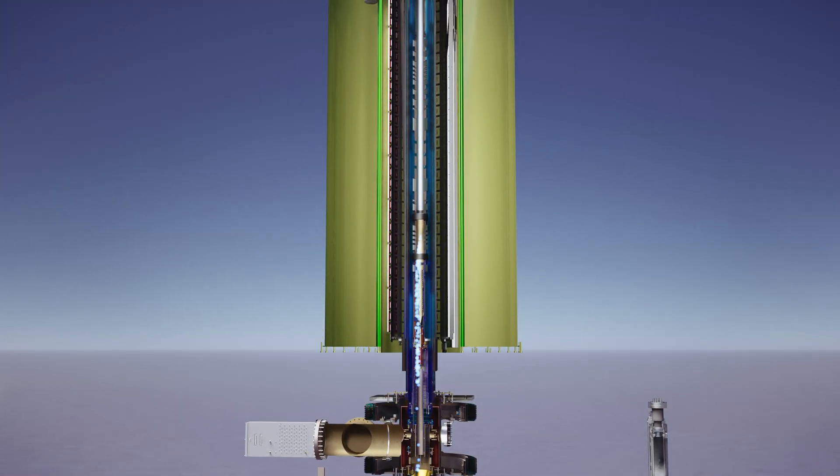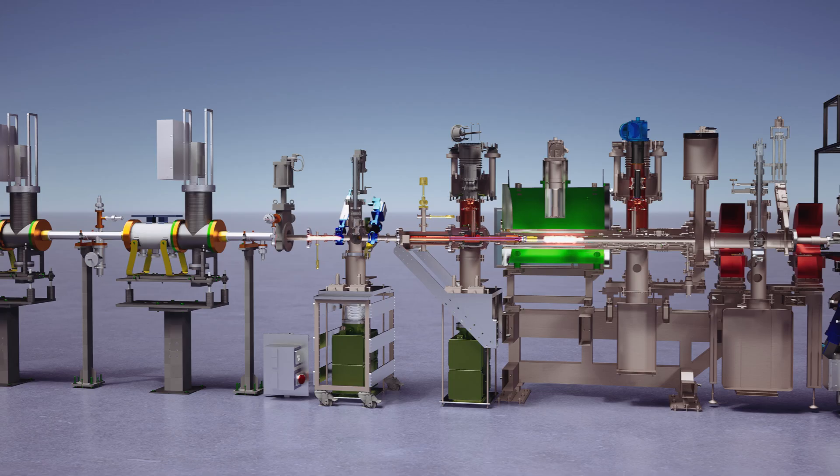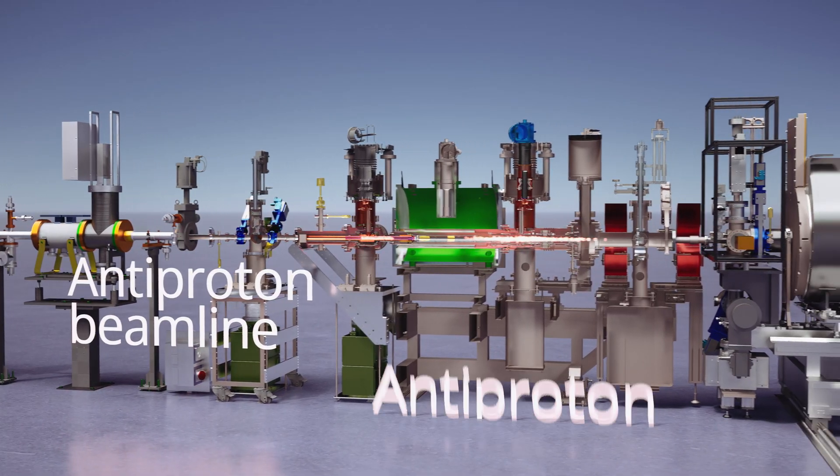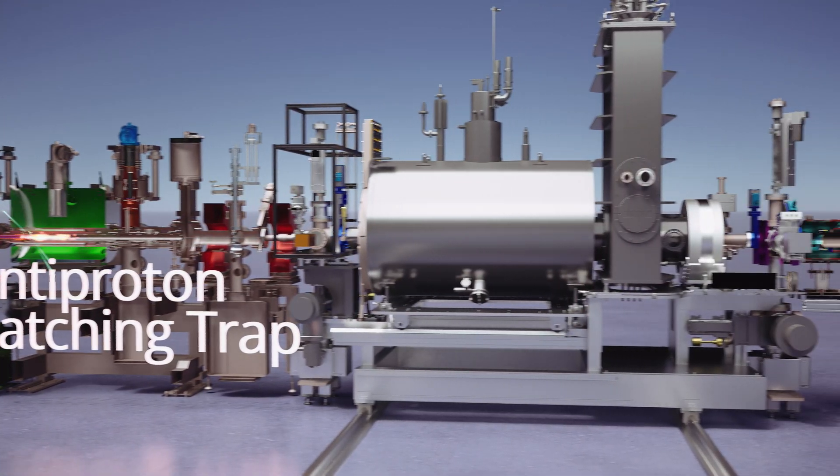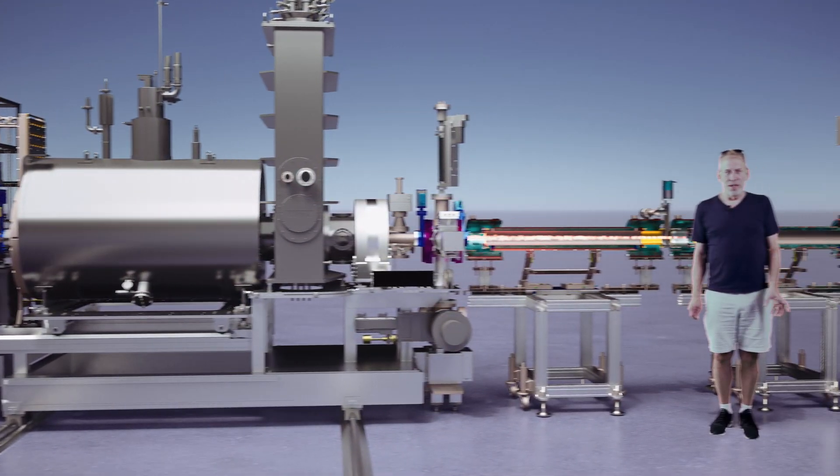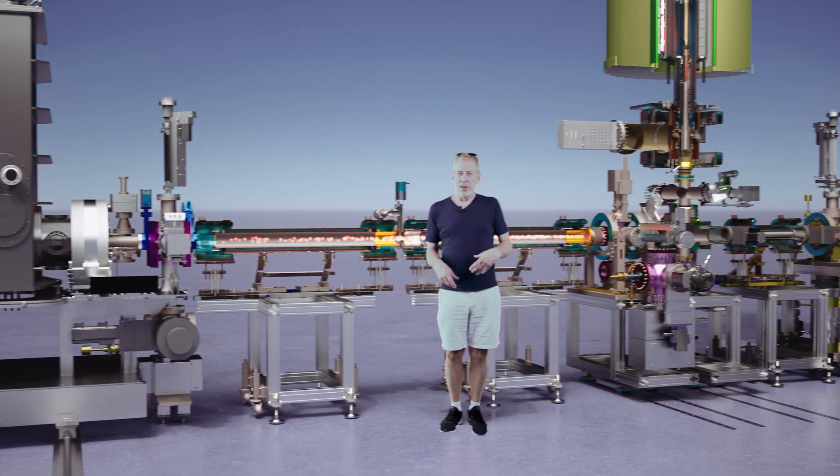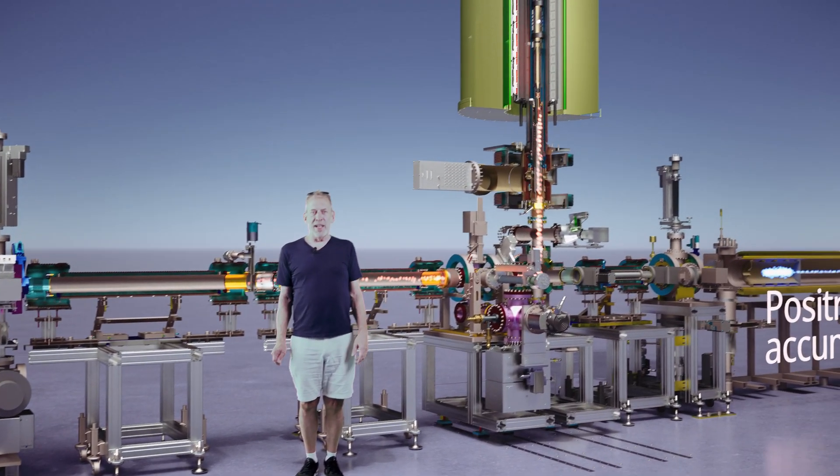We trap some positrons, and they wait there for antiprotons, which come from the AD and ELENA rings, pass through the beamline, turn the vertical corner up into Alpha-G, where they're dynamically recaptured.